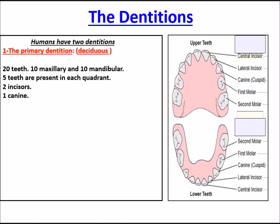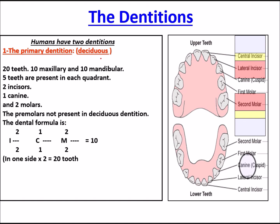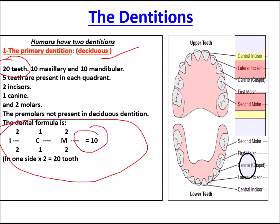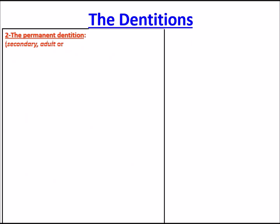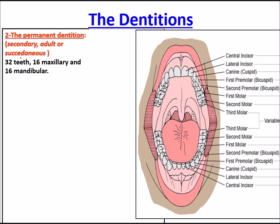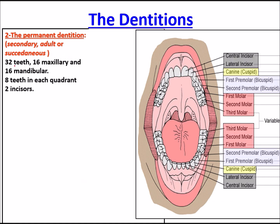There are two dentitions. First is primary or deciduous dentition, with a total of 20 teeth — 10 maxillary and 10 mandibular — containing two incisors, one canine, and two molars. The basic tooth formula is 2-1-2, with 10 teeth in the upper maxillary arch and 10 in the mandibular arch, giving 20 temporary teeth in total.